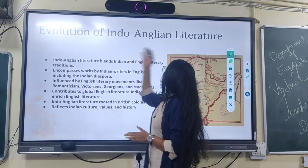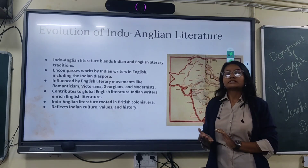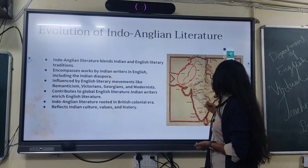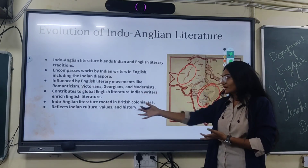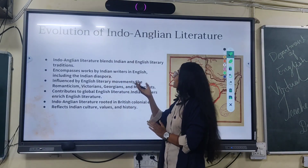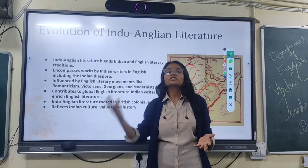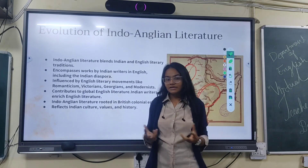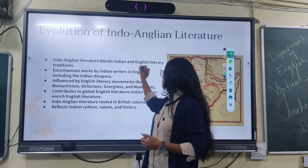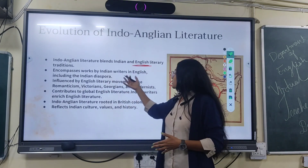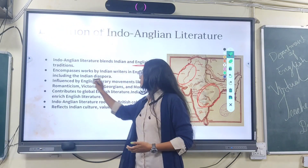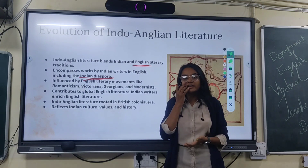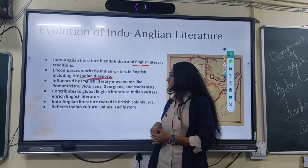Let us take a look at the evolution of Indian literature. The Indian Renaissance started before the freedom of India, when Pakistan and India were together, so writers from both places are considered Indian Renaissance writers. Indian literature blends Indian and English literary traditions. It encompasses work by Indian writers in English, including the Indian diaspora — writers born in India who grew up in foreign countries.